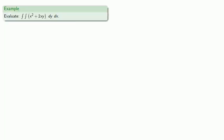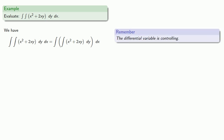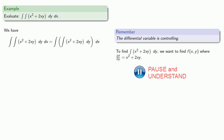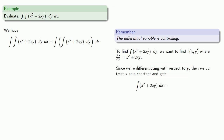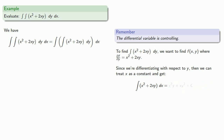Let's try to find a double integral. This means to evaluate the inside integral first. Remember, the differential variable is controlling, so to find the integral of x squared plus 2xy dy, we want to find a function f(x,y) where the partial with respect to y is our integrand. Since we're differentiating with respect to y, we can treat x as a constant. Remember that the constant of integration here is not just a constant, but could in fact be any function of x.